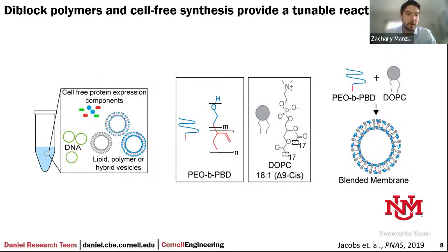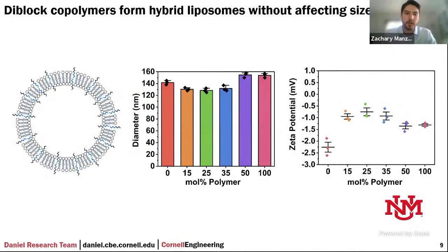We envision that the ability to create these mimetic membranes with functional oriented membrane proteins will provide a platform to carry out sensitive and precise protein events. We're using a blended membrane system from the Kamat lab at Northwestern University, published in 2019, forming blended membranes using a diblock copolymer — polyethylene oxazoline-polyethylene — with DOPC lipids. They found that by blending these diblock copolymers and lipids, they can tune the biophysical properties of the vesicles and affect protein synthesis properties.